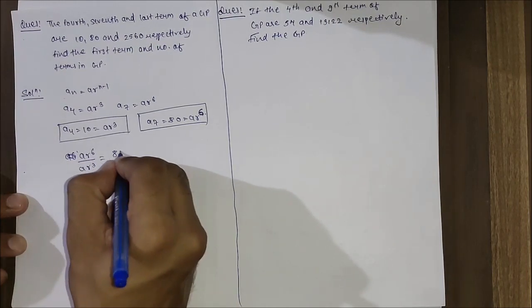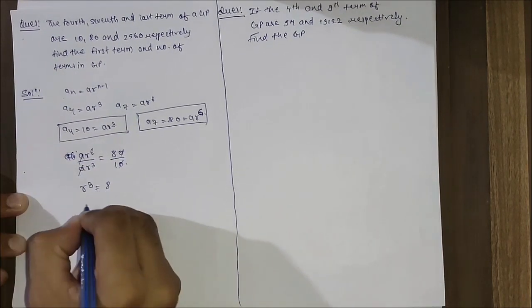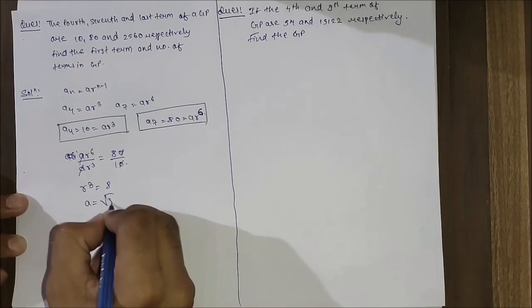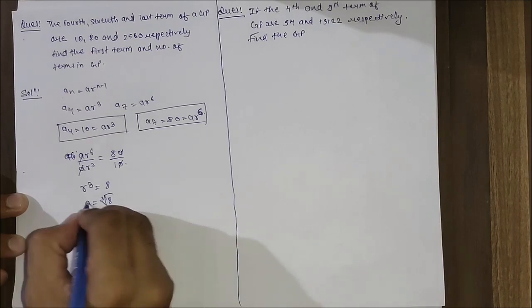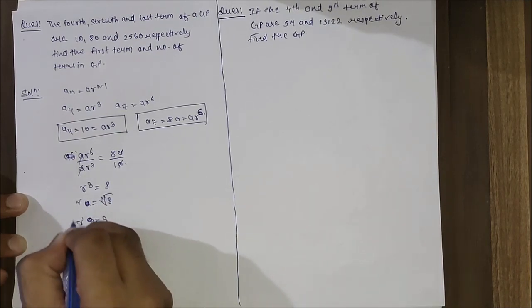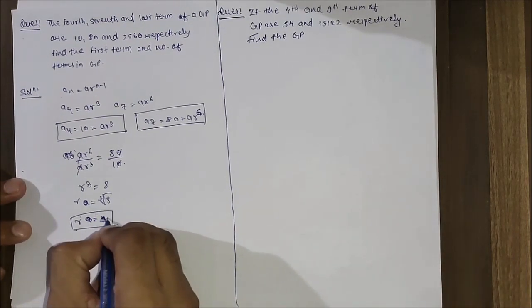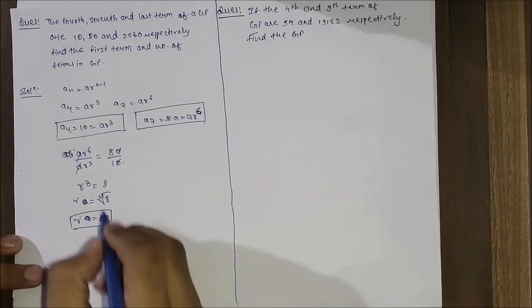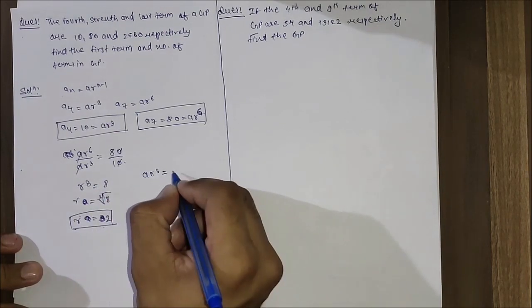We can write ar⁶ upon ar³ equals 80 upon 10. So ar³ equals 8. We get r³ equals 8, so r equals the cube root of 8, which is 2.